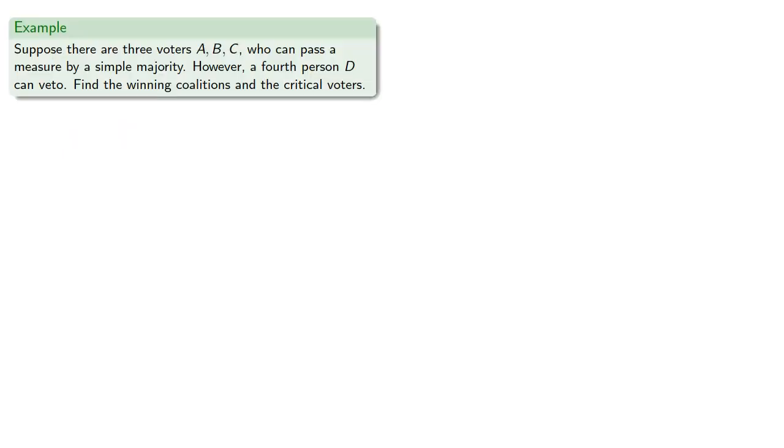Suppose there are three voters, A, B, and C, who can pass a measure by a simple majority. However, a fourth person, D, can veto.